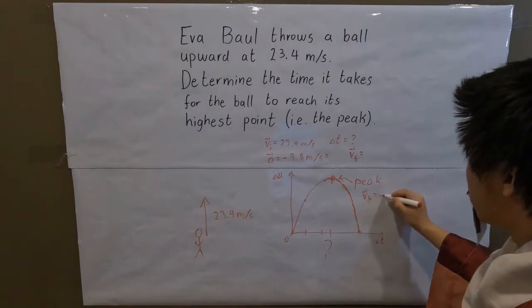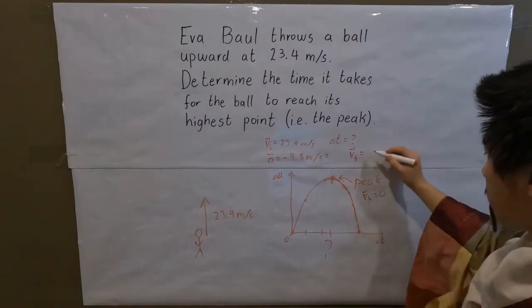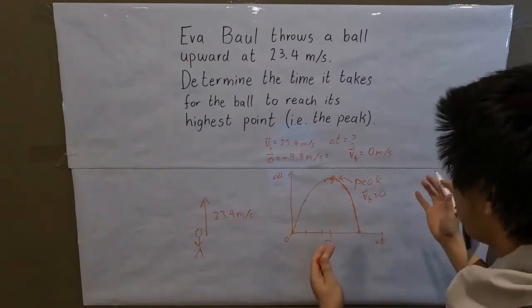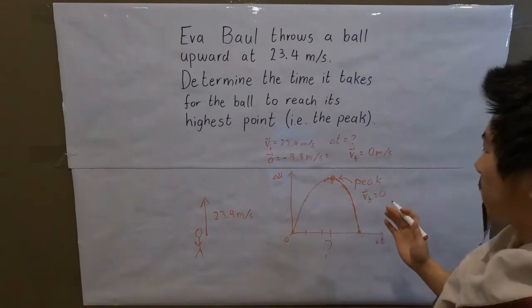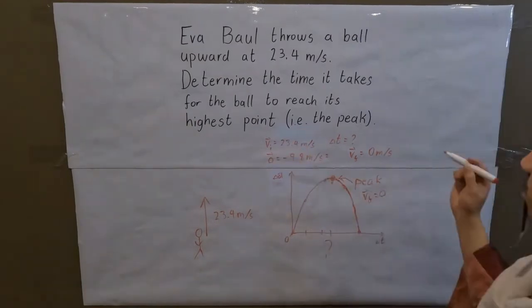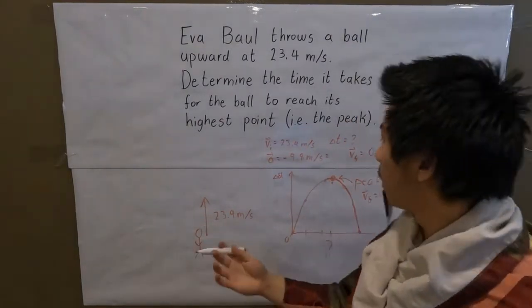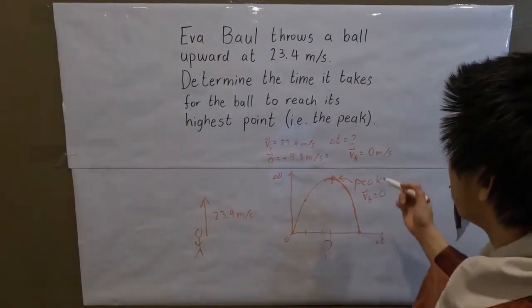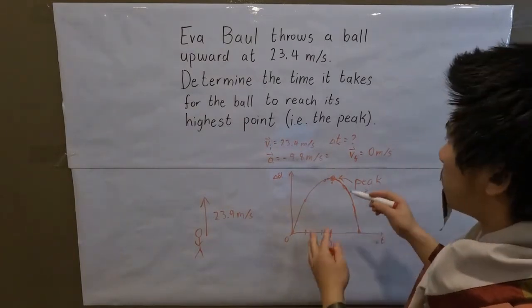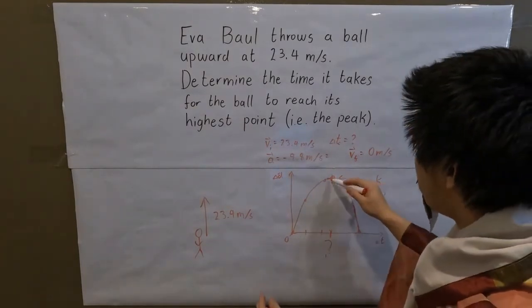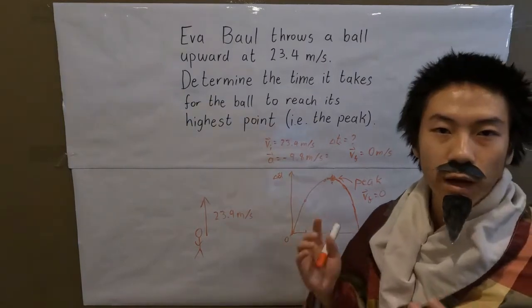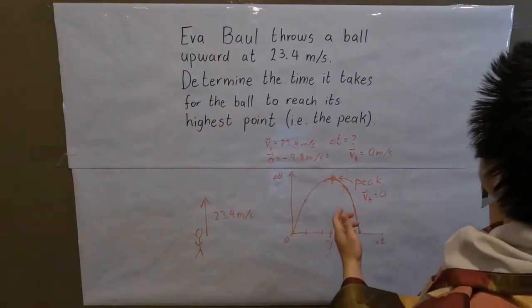At the peak, vf is equal to zero meters per second. With all this information we are now able to solve the question and find at what time the ball reaches the peak. Now it's time to find the best equation.